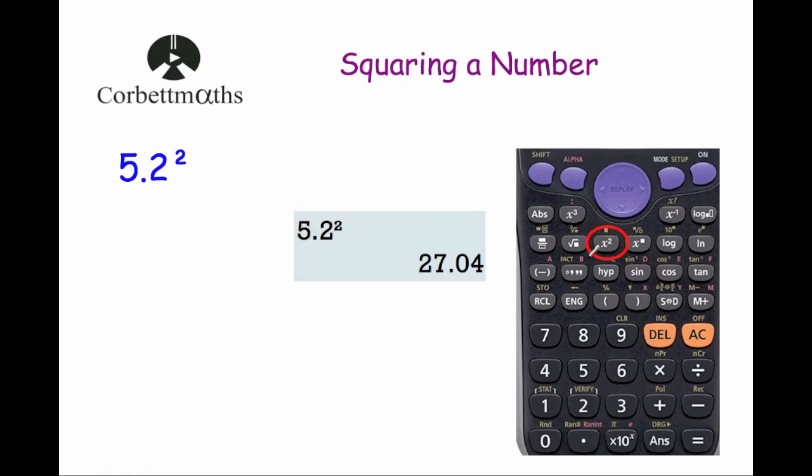It's an X with a little squared symbol above it. So you would type in 5.2, press that button and press equals. Again, it would give you the answer of 27.04. And that's it.